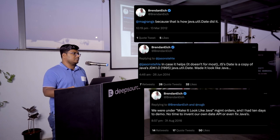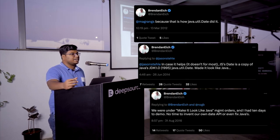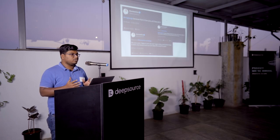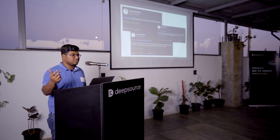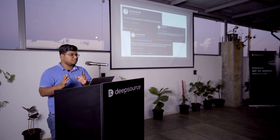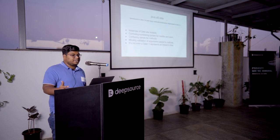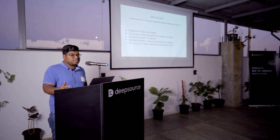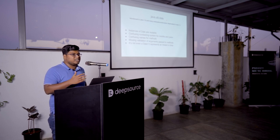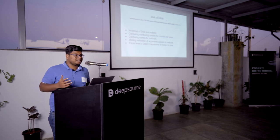Brendan Eich, the creator of JavaScript, has claimed he only had 10 days to create JavaScript and show a demo. What he did was copy the Java Date API as-is in 1995. So whatever was implemented in Java, the same thing he implemented in JavaScript. We were really quick in copying it, but for deprecation, we didn't copy them. And for the past 20 years, we've been stuck with what Java had deprecated around 20 years back.